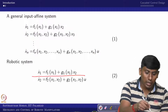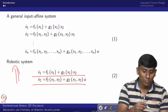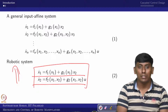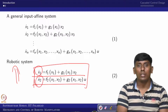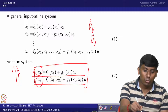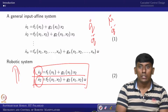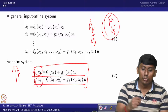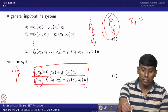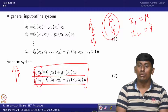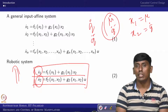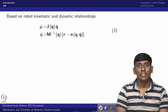Our robotic manipulator's dynamic model and kinematic model can be written in input affine form. Since the robotic system is a second-order system, we should have two subsystems. One is x1 dot and the other is x2 dot. x1 dot can be written as q dot, and x2 dot can be written as q double dot — or we can take mu dot and q double dot.